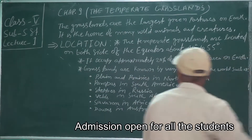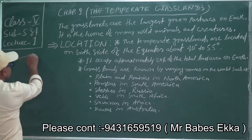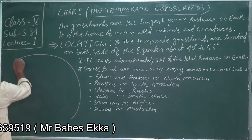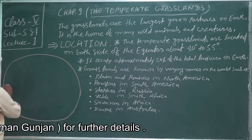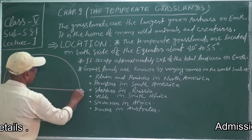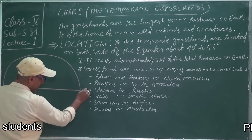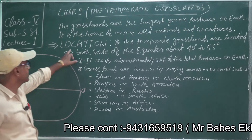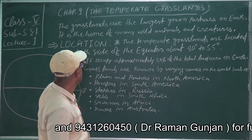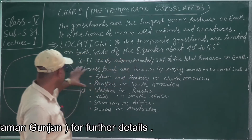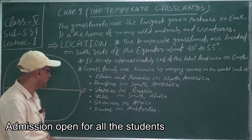Next topic: we will see the location — in which part of the earth temperate grasslands are found. The temperate grasslands are located on both sides of the equator, at about 40 degrees to 55 degrees latitude.